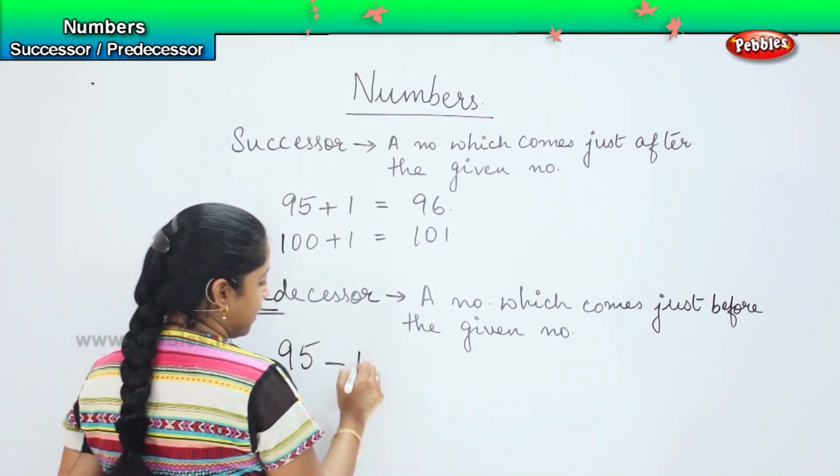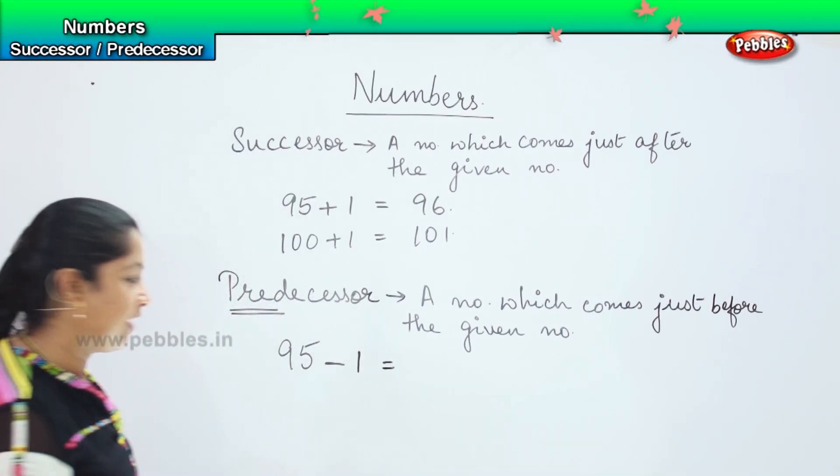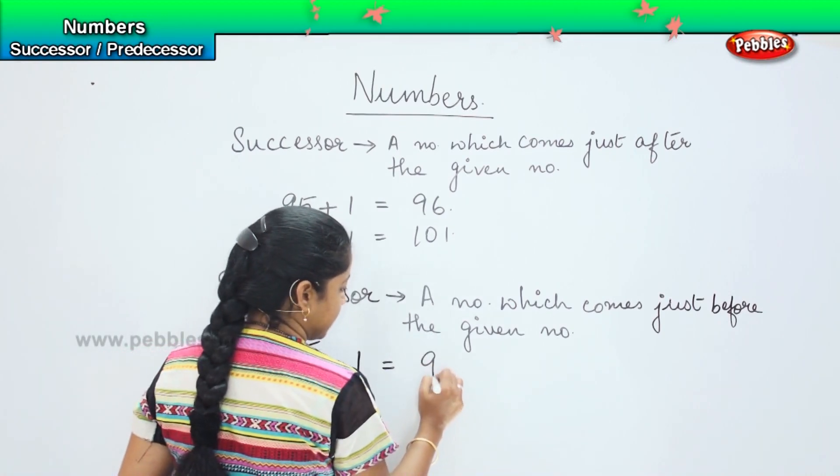What am I going to do here? I will reduce it by minus 1. So what is the number which comes immediately after 95? Very good, it is 94.